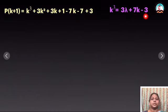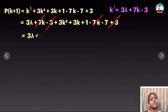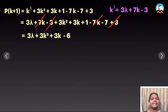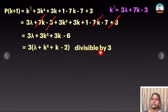Now I am going to prove n equal to k+1. Substituting k+1 in place of k, expanding (k+1)³ using a+b whole cube: k³ + 3k² + 3k + 1, minus 7(k+1) + 3, which gives k³ + 3k² + 3k + 1 - 7k - 7 + 3. Now substituting k³ = 3λ + 7k - 3, the 7k and -7k cancel, the -3 and +3 cancel. I get 3λ + 3k² + 3k - 6. Taking 3 as common from all terms gives a multiple of 3. Therefore P(k+1) is true.